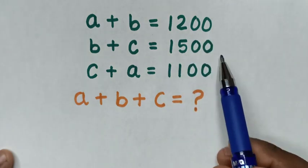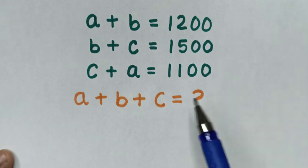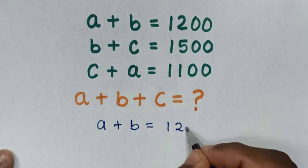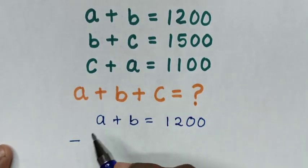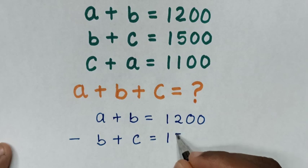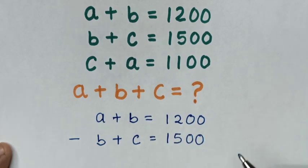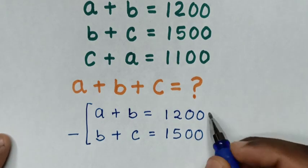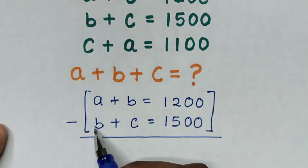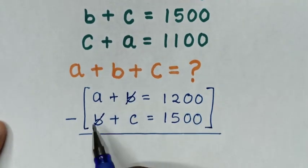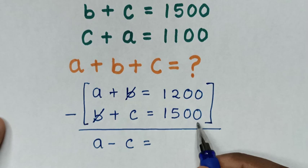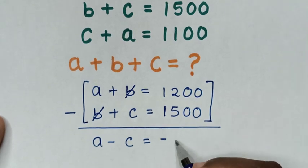First, we take the first equation minus the second equation. From A plus B equals 1200, minus B plus C equals 1500. We subtract on both sides — B minus B cancels out, giving us A minus C is equal to 1200 minus 1500, which is negative 300.